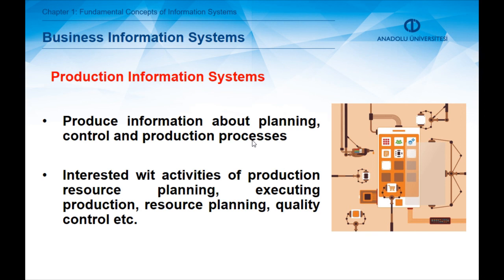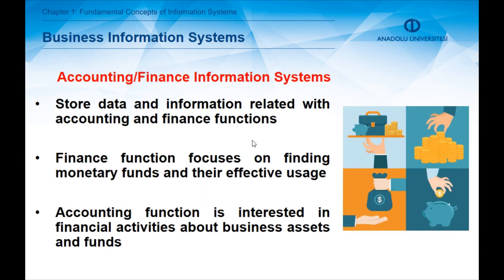Production information systems are about producing information for planning, control, and production processes. They are concerned with activities of production resource planning, executive production resource planning, and quality control. Accounting and finance information systems store data and information related to accounting and finance functions. The finance function focuses on finding necessary monetary funds and their effective usage in business operations, while the accounting function is concerned with financial activities about business assets and funds.